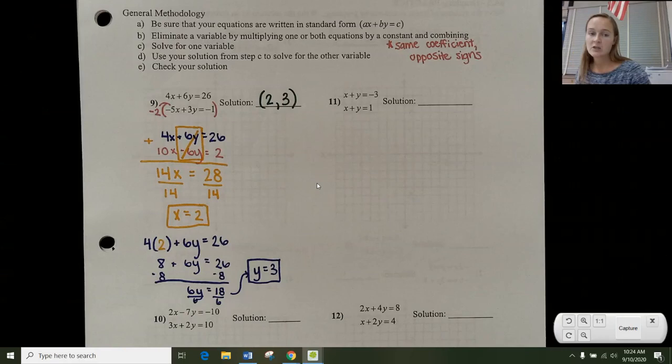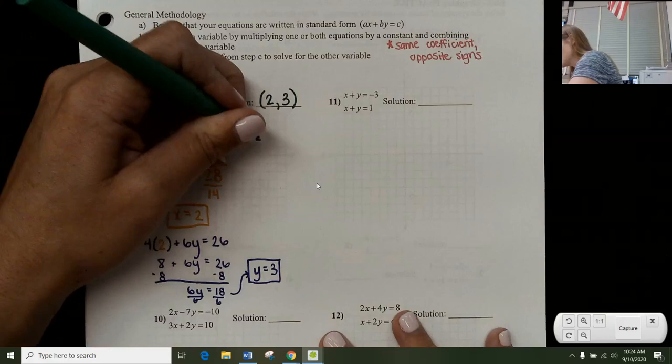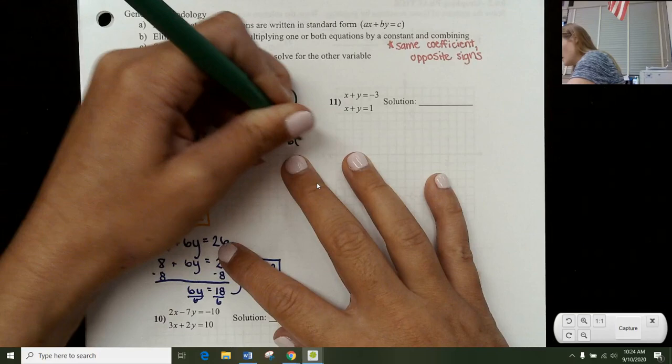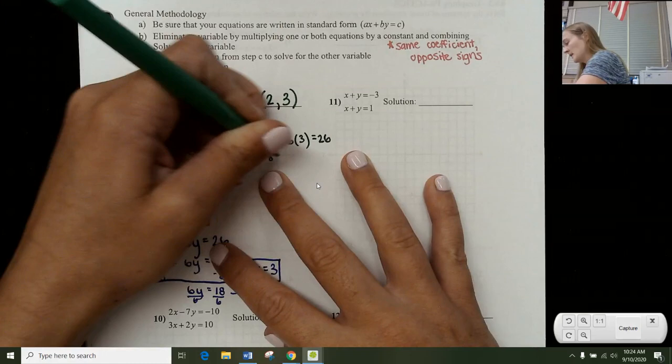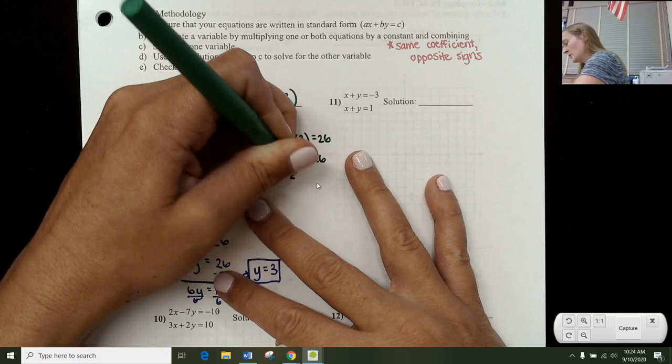So my full solution is 2 comma 3. Now, just like in substitution, I can check that solution by plugging it into each equation. So 4X, so 4 times 2 plus 6Y, so 6 times 3, should equal 26. So does 8 plus 18 equal 26? That is true. So I know my answer is correct there.